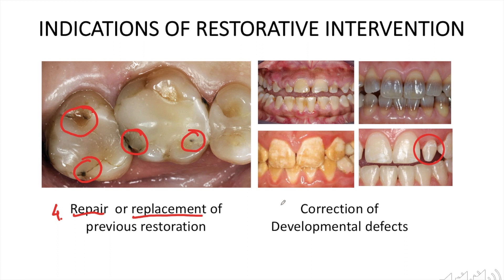Another indication for restorative treatment is correction of developmental defects. Various developmental defects can include enamel and dentine hypoplasia, hypermineralization, amelogenesis and dentinogenesis imperfecta, tetracycline stains, peg-shaped laterals, etc. Correction of such defects can be done by tooth preparation followed by restoration, so as to achieve normal form, function, and aesthetics of such teeth.